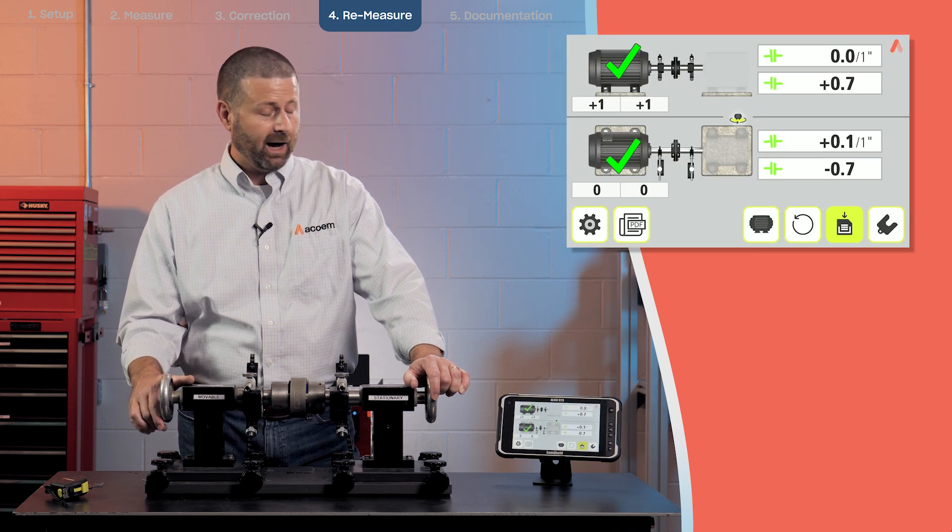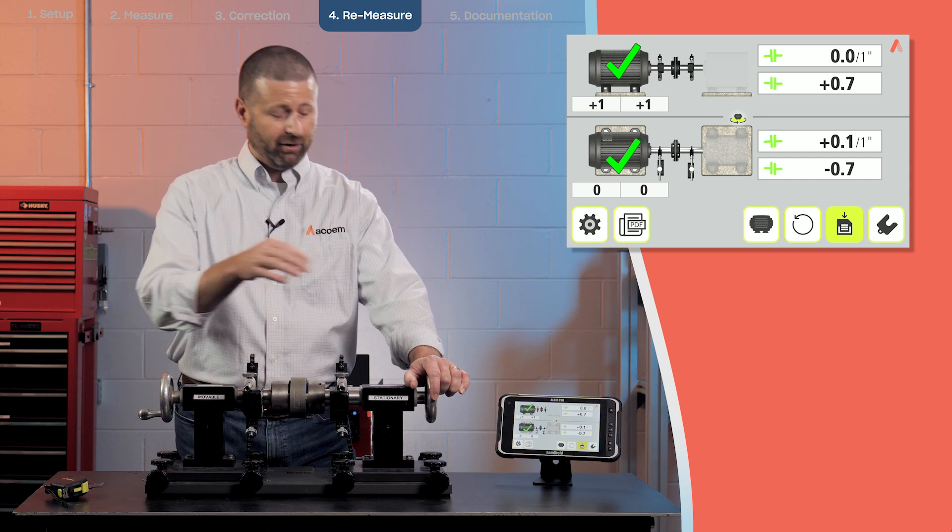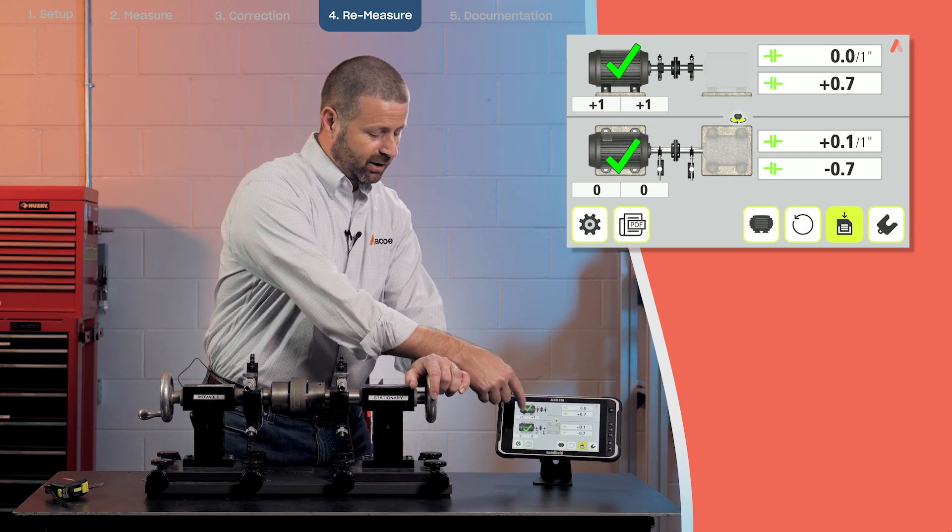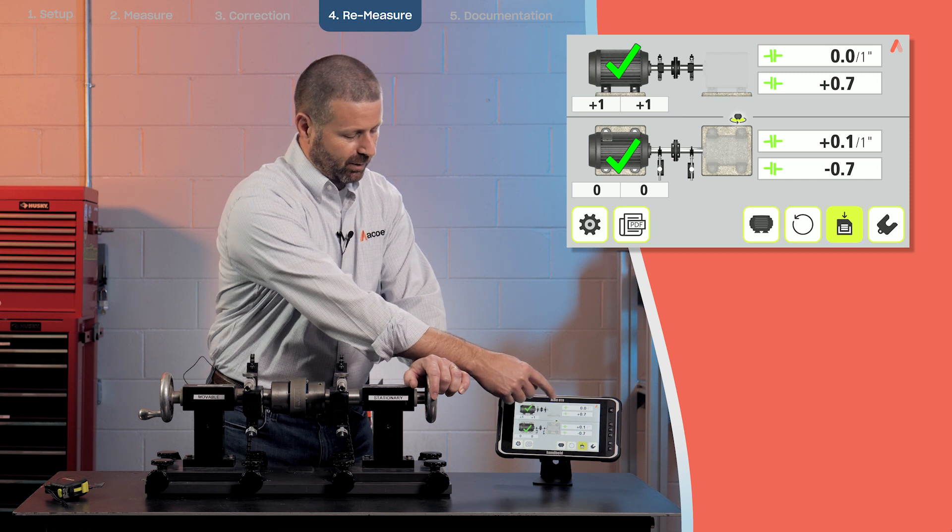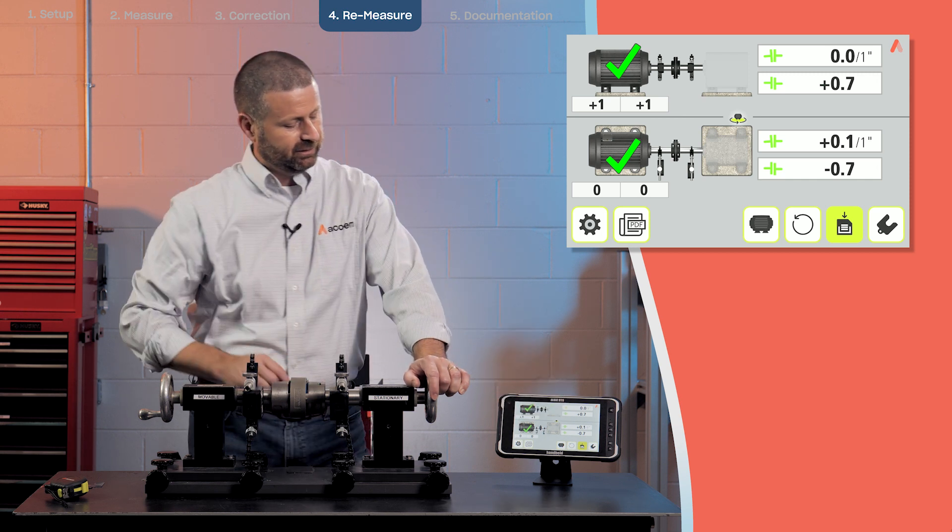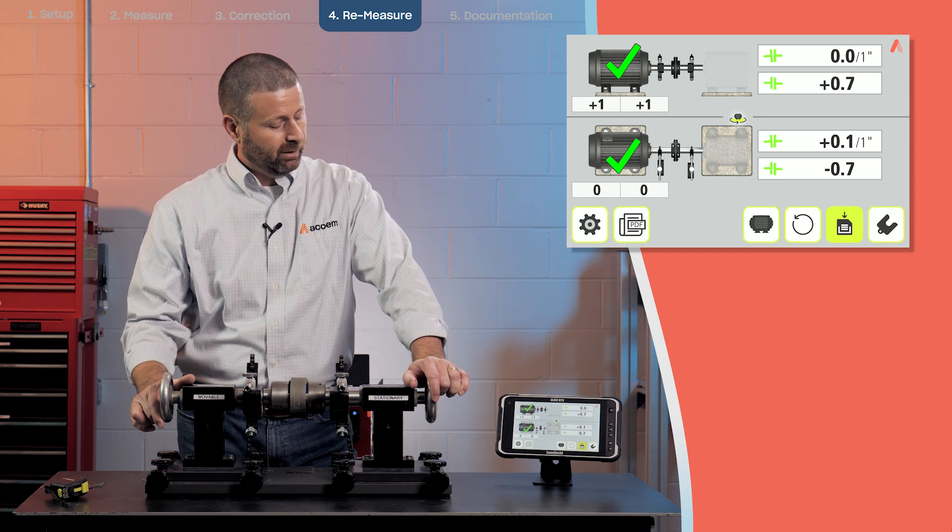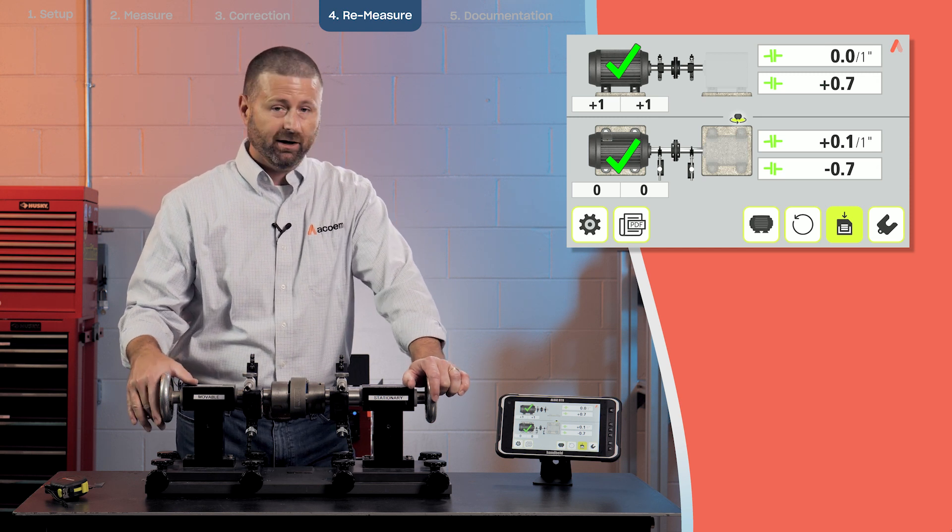Okay, so now we have a complete alignment, which I can confirm by looking and seeing that I have a green check mark and all my tolerances have turned green. So the final step here is going to be to document this alignment.